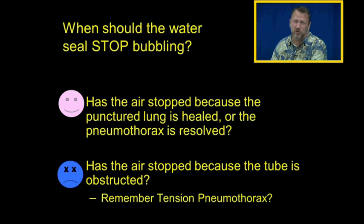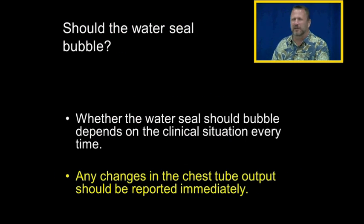If we put a chest tube in someone with a tension pneumothorax, then we're going to expect the water seal to bubble while they recover. If the water seal stops bubbling in a patient with a tension pneumothorax, that might indicate obstruction in the chest tube, especially if there's a hemothorax and we're draining blood through the chest tube. That can cause clots to form in the chest tube and obstruct the chest tube to where the tension pneumothorax can progress and be lethal. So when should the water seal stop bubbling? That depends on the clinical situation every single time.